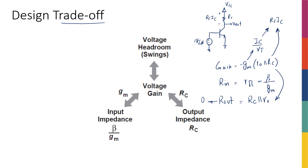Again, going back to GM, if I increase GM, look at the Rin. Rin is Rpi, which is beta over GM. Therefore, in a sense, I'm decreasing Rin, which was supposed to be as high as possible, was supposed to be infinity.